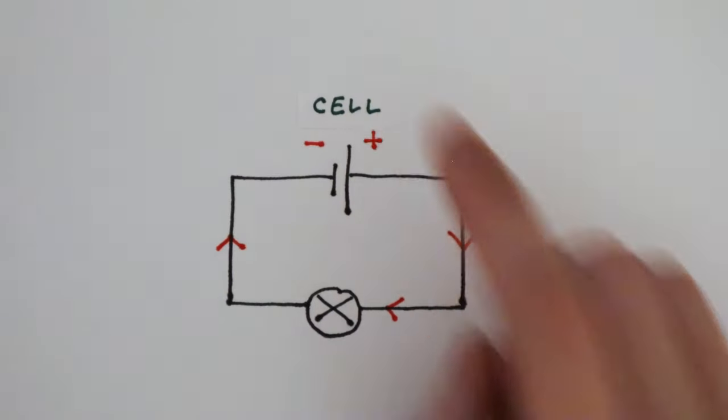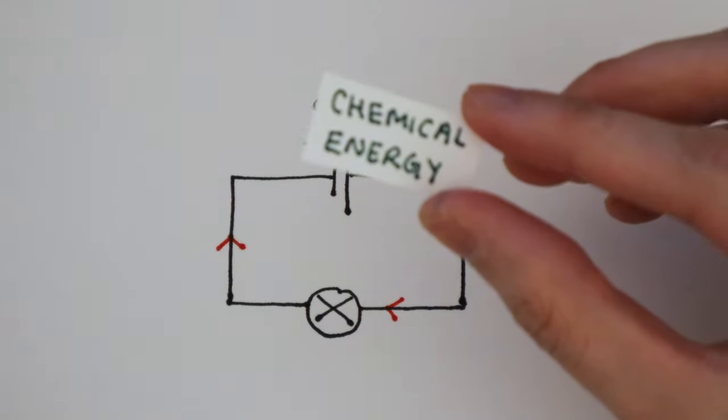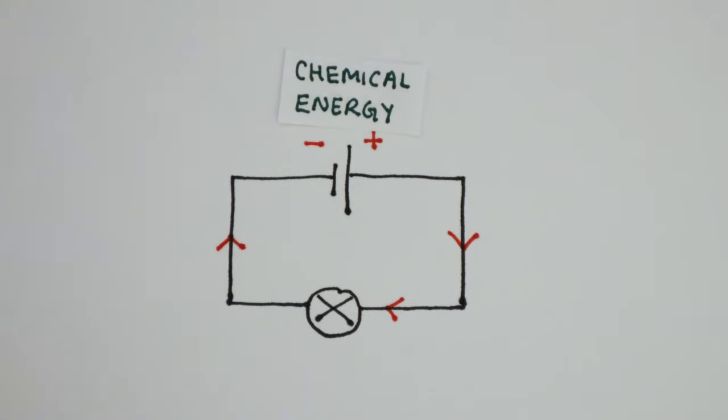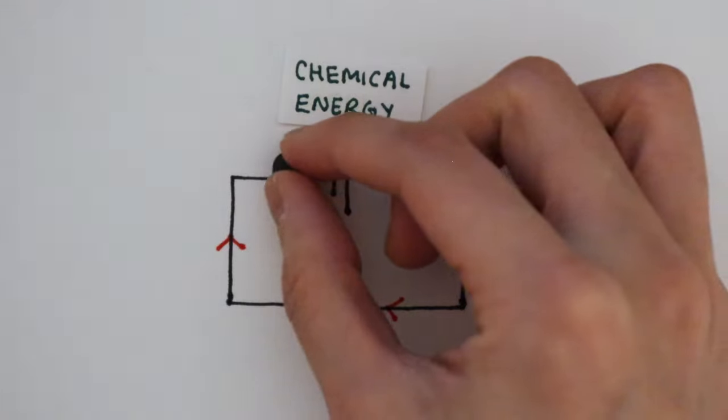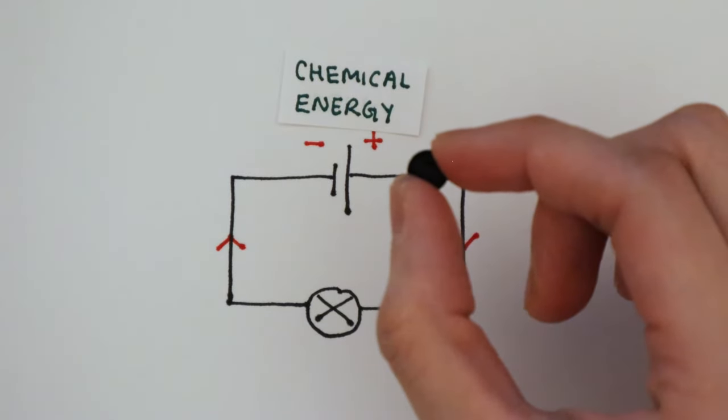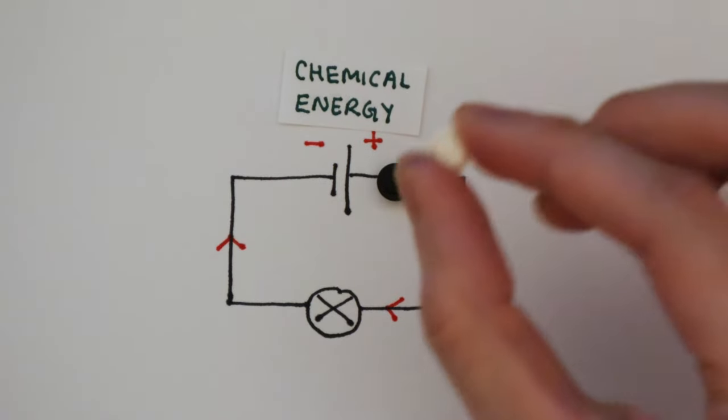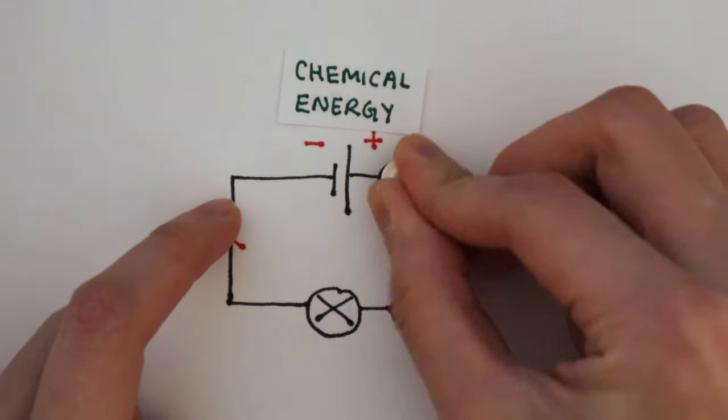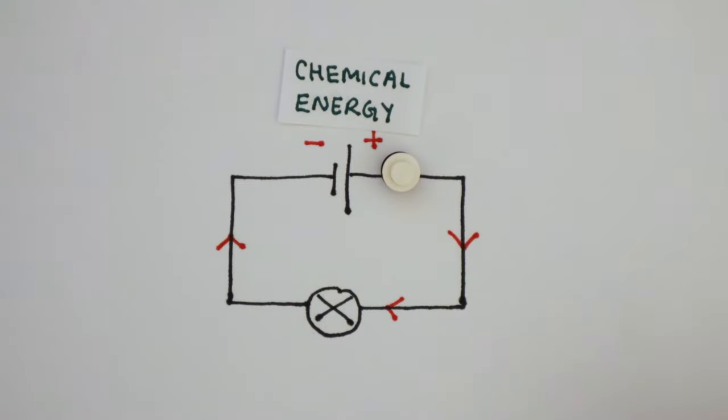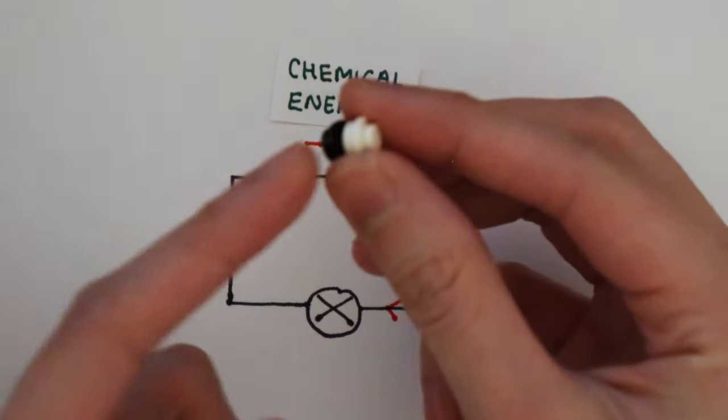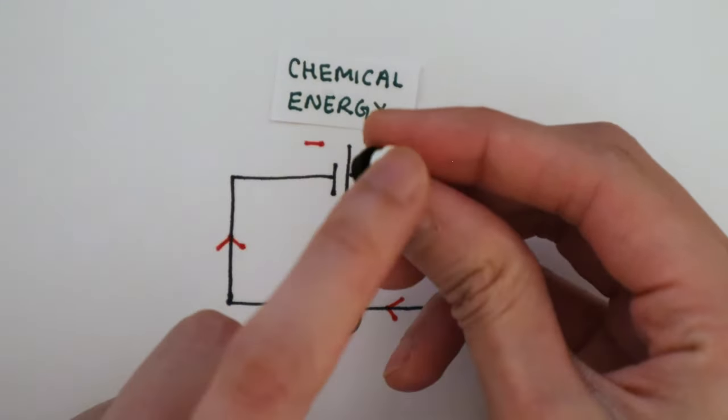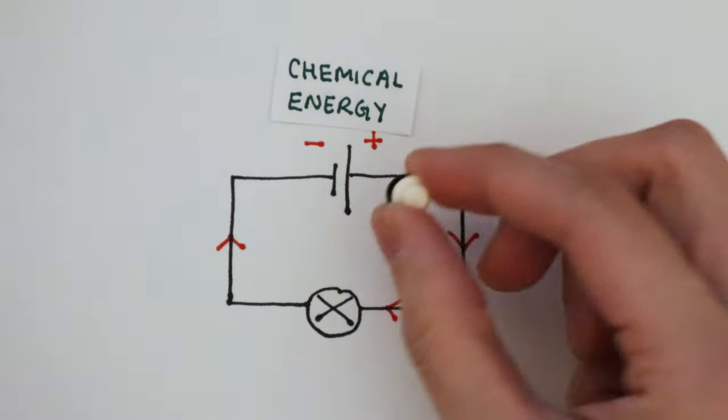A cell or a battery is a store of chemical energy. As an electron travels through the cell, the cell gives up a tiny bit of this chemical energy. I'm going to represent this energy using this bit of Lego. You can also think of this electron transferring the chemical energy from the cell along the circuit.